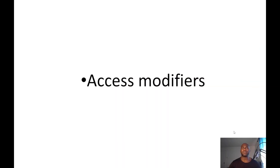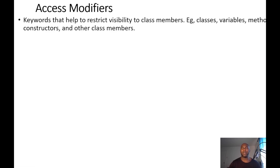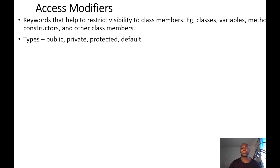we're going to be discussing Access Modifiers. Access Modifiers are keywords that help to restrict the visibility of a class and its members. You use them to abstract your class members so that you can specify which section of your program should be available or accessible at a particular point. There are basically four types of Access Modifiers.